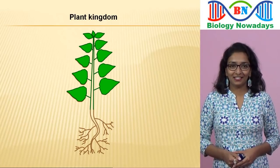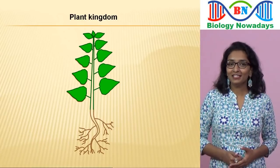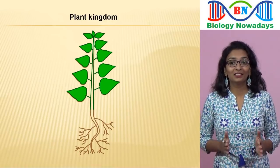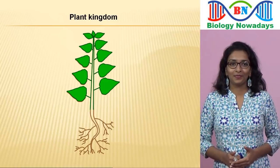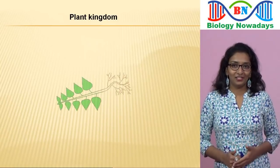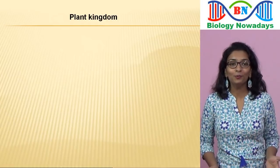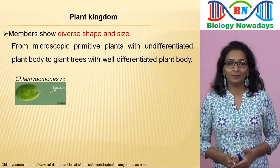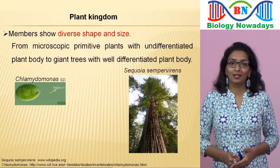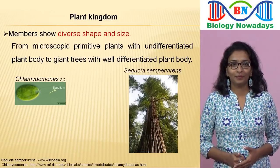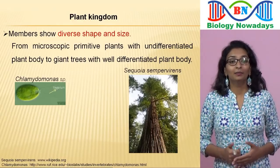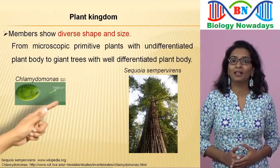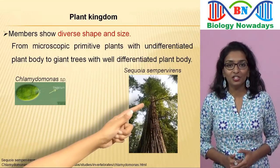Welcome to the wonderful kingdom of plants. When I say plant kingdom, the first image that comes to your mind will be a typical plant with leaves, stem and roots. Now it's time to break this image because the members of the plant kingdom are so diverse in shape and size. The size ranges from microscopic primitive plants with undifferentiated plant body to giant trees with well-differentiated plant bodies. An undifferentiated plant body means the plant body which is not differentiated into leaves, stem or roots, while a well-differentiated plant body is differentiated into different parts.